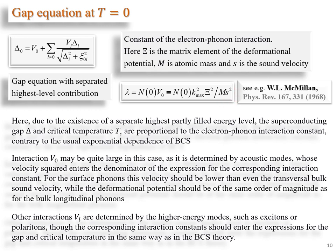For the surface phonons, this velocity should be lower than even the transversal bulk sound velocity, while the deformational potential should be of the same order of magnitude as for the bulk longitudinal modes. Other interactions V sub i are determined by the higher energy modes, such as surface excitons or polaritons, though the corresponding interaction constant should enter the expressions for the gap and critical temperature in the same way as in the BCS theory.